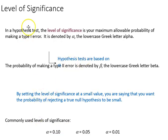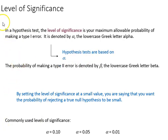So our goal of course is to minimize the chance that we're going to make an error, and that brings us to the notion of the level of significance. In a hypothesis test, the level of significance is your maximum allowable probability of making a type one error, and that is denoted by the Greek letter alpha. So hypothesis tests are based on alpha, the level of significance.